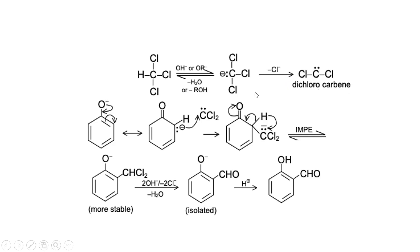Dichlorocarbene acts as an electrophile. Why? Because it is an electron-deficient species. Carbon bonded with two Cl atoms has two electrons from each bond — total six electrons on this carbon. But for octet completion, eight electrons are needed, so two more electrons are needed. This makes carbon an electron-deficient species, and therefore it acts as an electrophile. All carbenes are known to act as electrophiles.